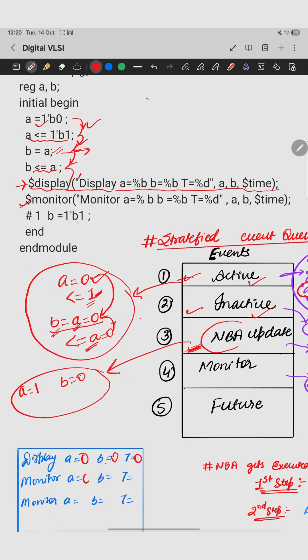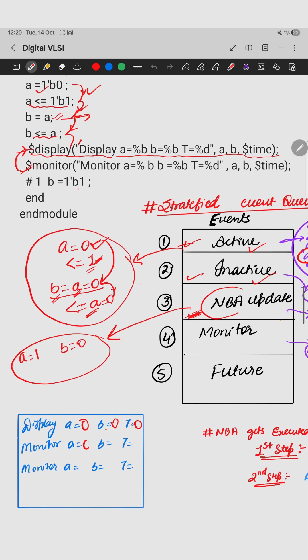Similarly, monitor will be the next sequential thing. A will get a value of 1 and B will be getting a value of 0, and T will be 0. At time equal to 0. But here hashtag 1 comes, so hashtag 1 means after T equal to 1. So T equal to 1 means in the next time slot.